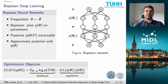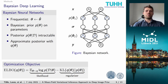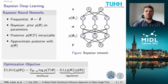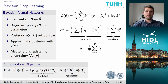The ELBO consists of a likelihood term — for example, the mean squared error — and a regularizer, the KL divergence, which minimizes the difference between the true prior and posterior. A Gaussian prior is essentially equal in this case to the well-known weight decay from the frequentist approach.